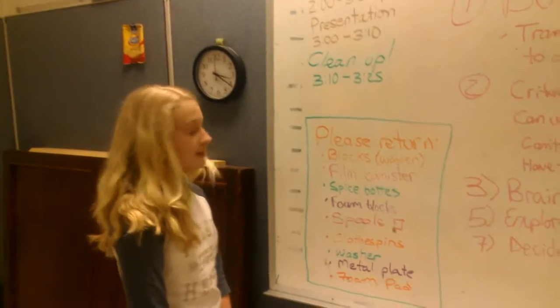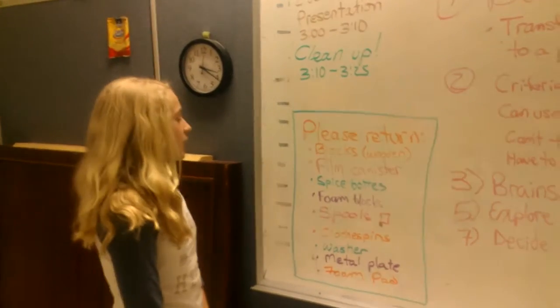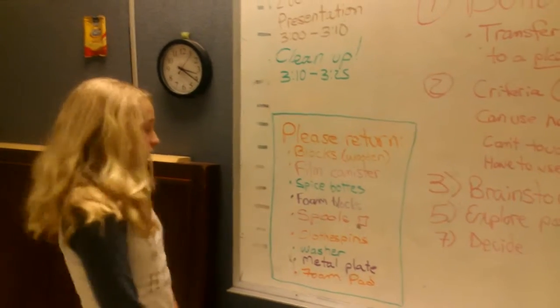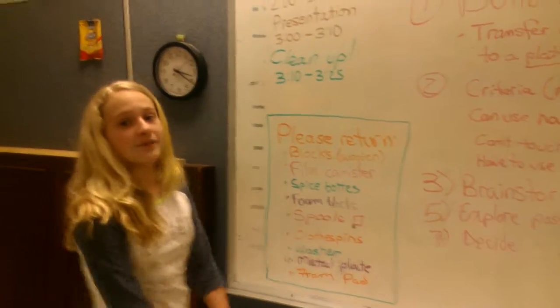And the things we had to return were the blocks, the film canister, the sponge bottles, the foam blocks, the spools, the clothespins, the washer, the metal plate, and the foam pad.